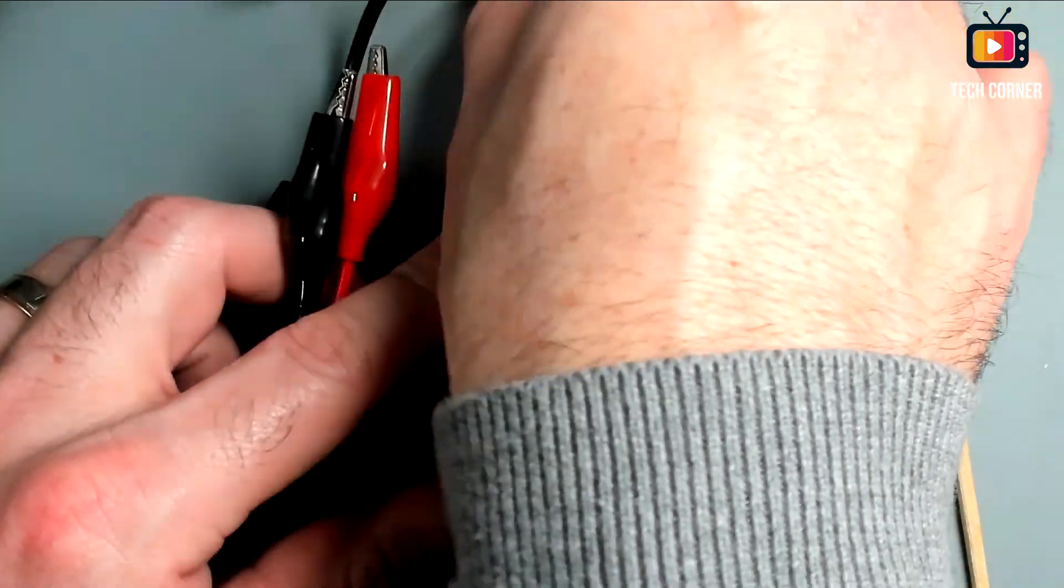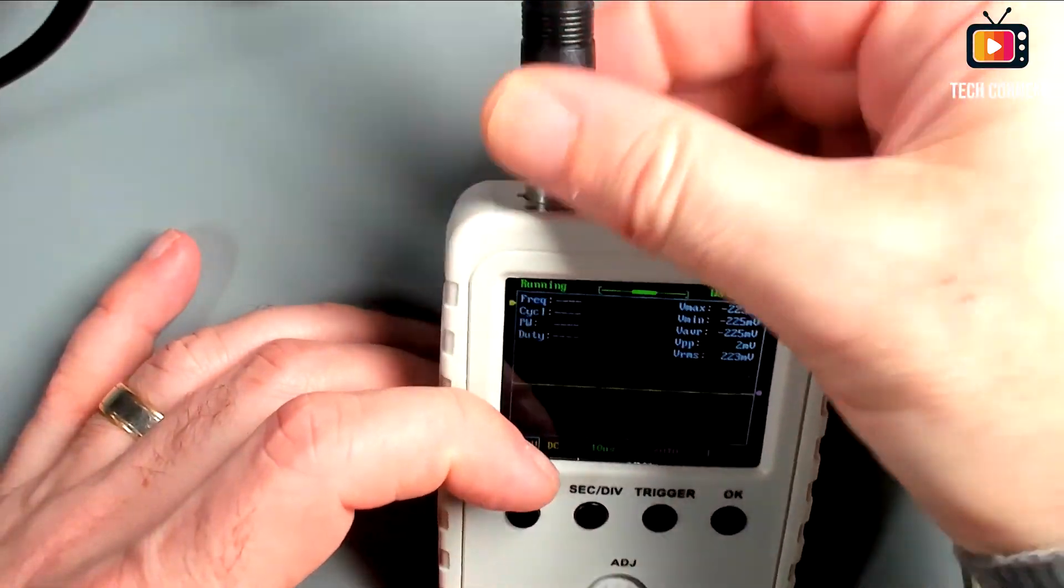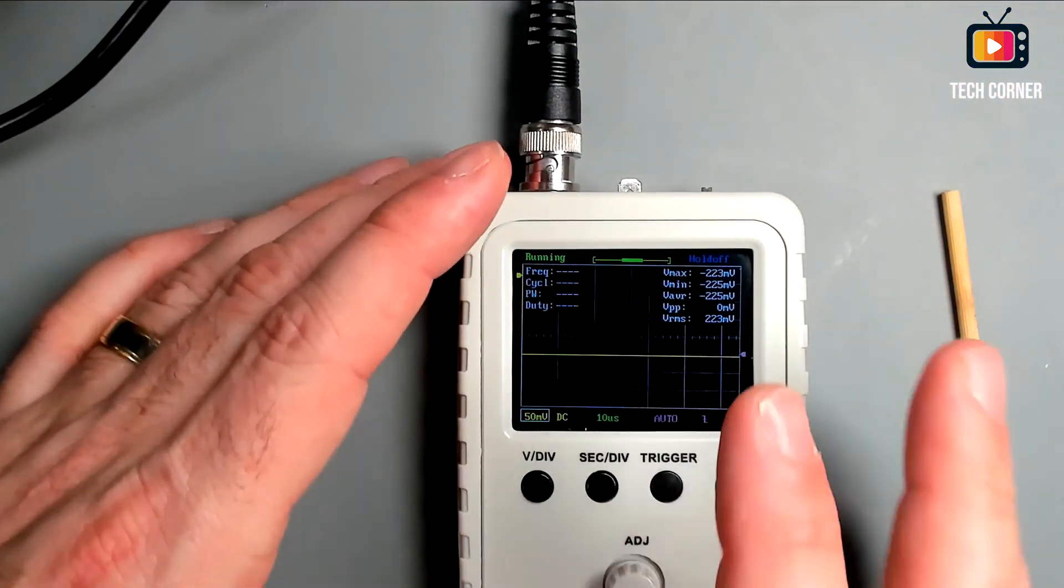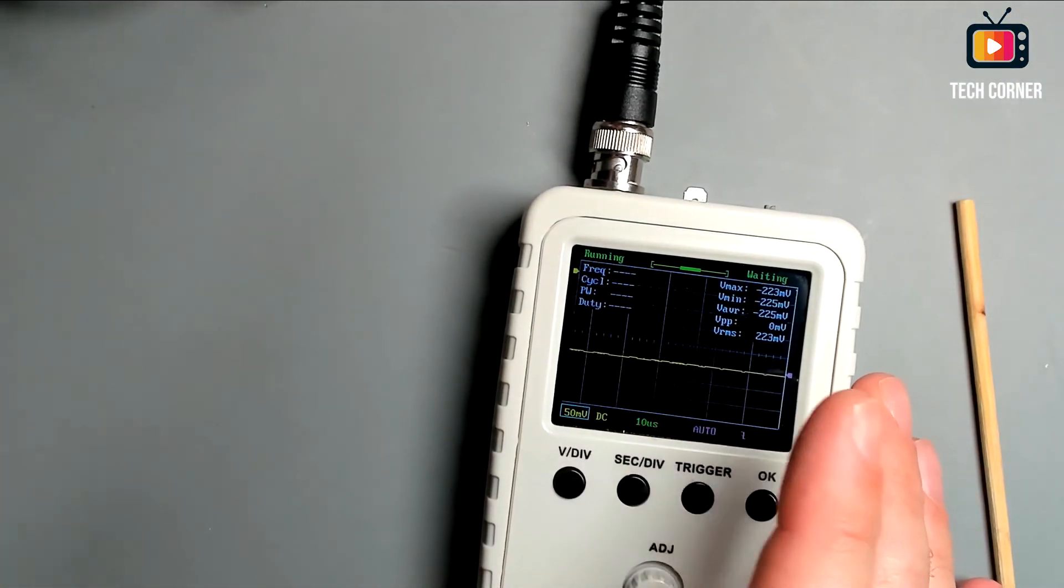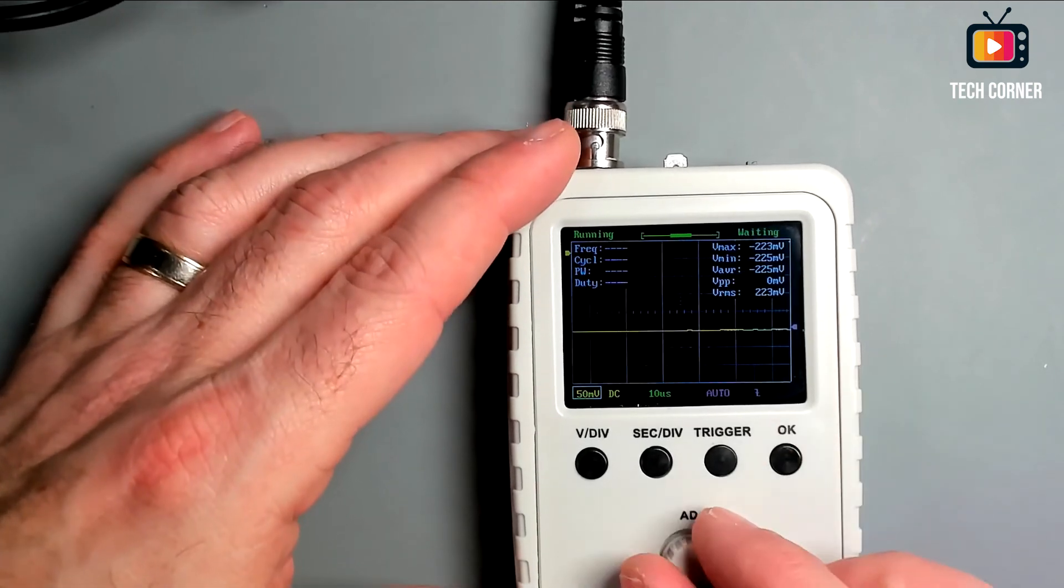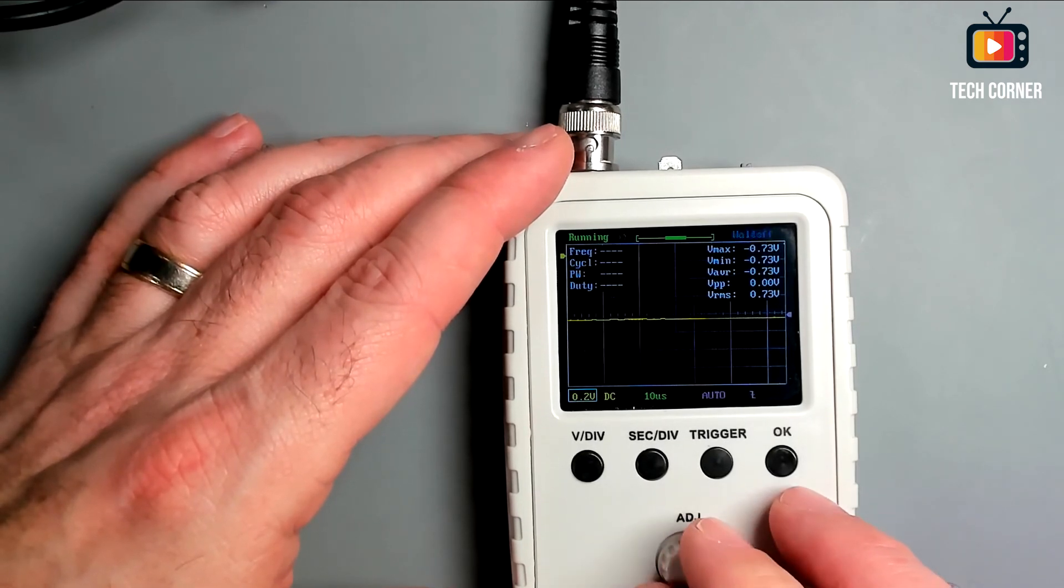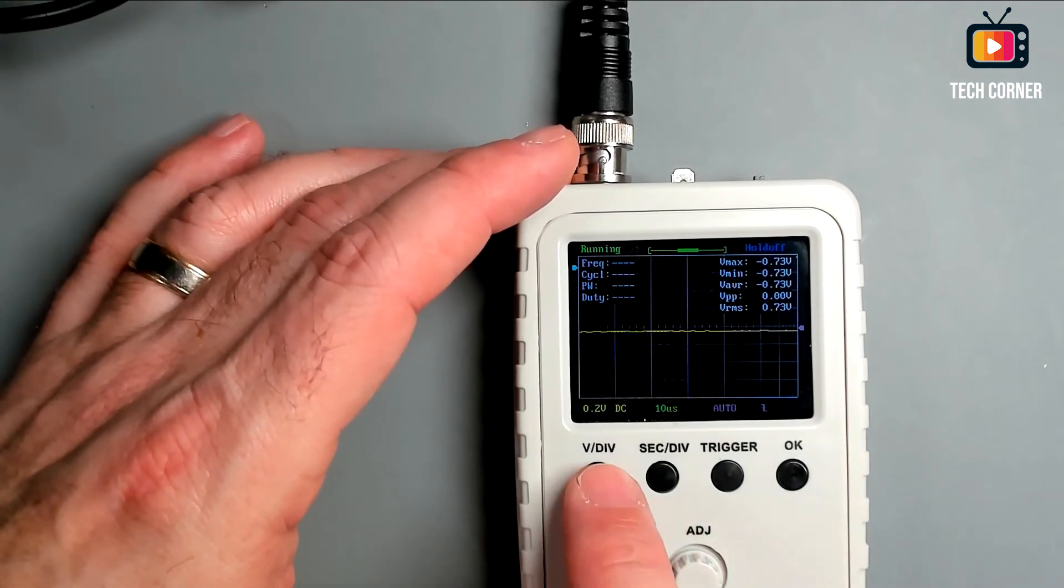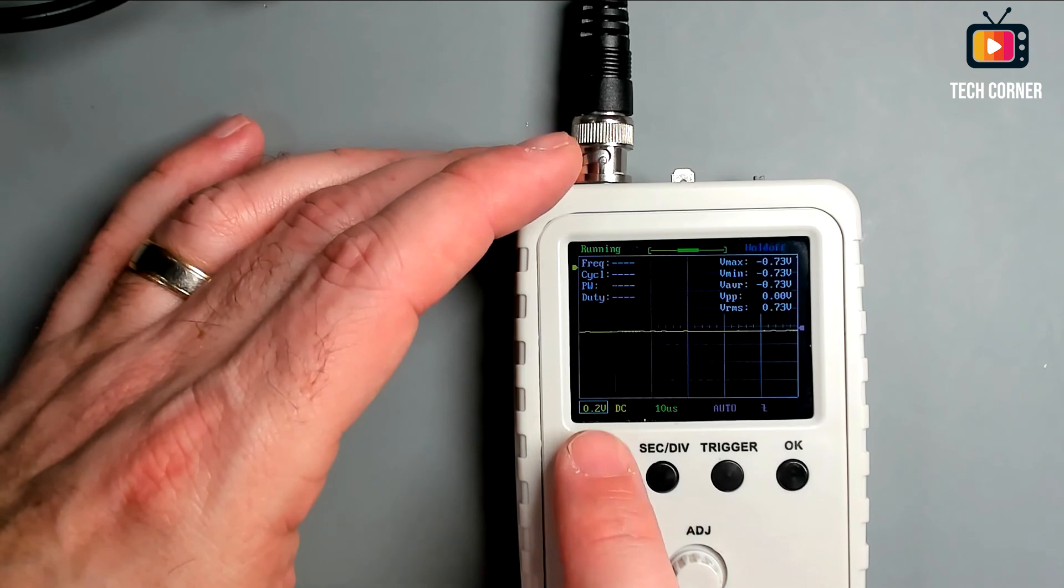Let me take this probe out and connect this BNC cable that is connected to the function generator. So pressing once we can see that we are able to select the voltage per division or sensitivity. Once selected you can use the knob to change the division, the voltage by division.